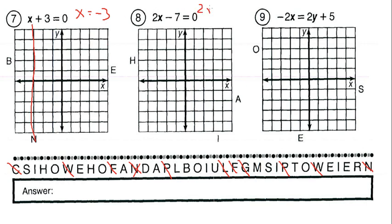Question 8: 2x equals 7, because we add 7 to that side. Dividing by 2 gives x equals 7/2, which equals 3 and a half. So we count to 3½ on the x-axis — that vertical line goes straight through letter I. Let's cross out I.